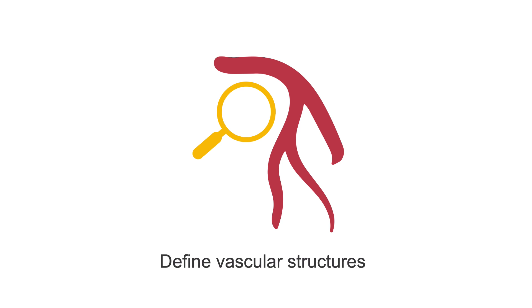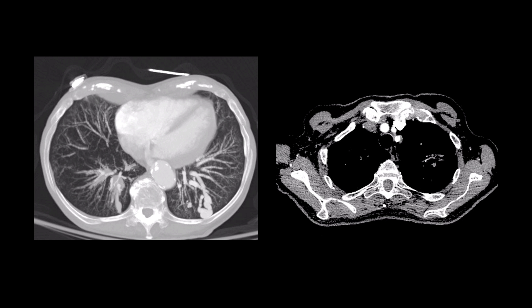The third scenario which requires IV contrast is when we need to define vascular structures. We can define morphology, such as in an arterial venous malformation, or we can define their patency, such as in atherosclerotic stenosis.